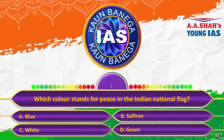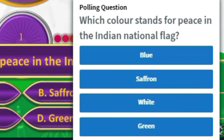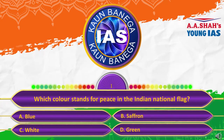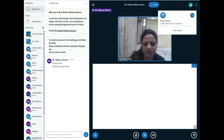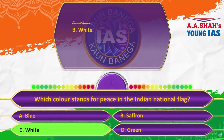This is question number one: Which color stands for peace in the Indian national flag? A, blue; B, saffron; C, white; D, green. The right answer for this question is white color. White color stands for peace.